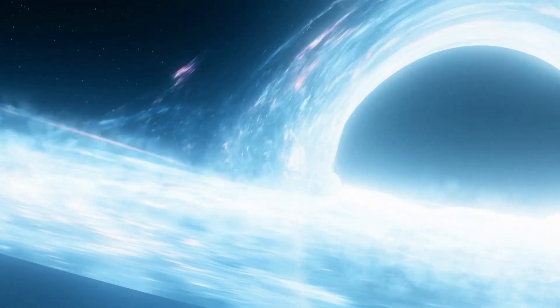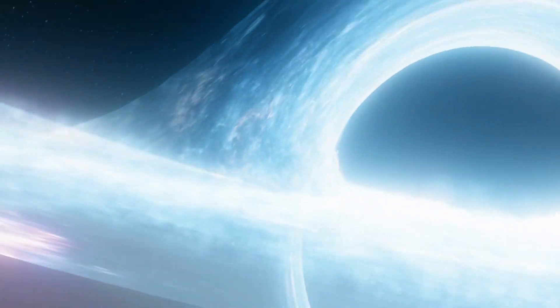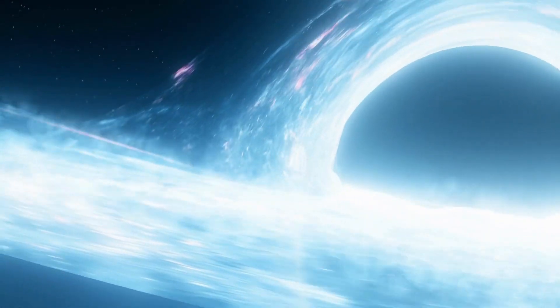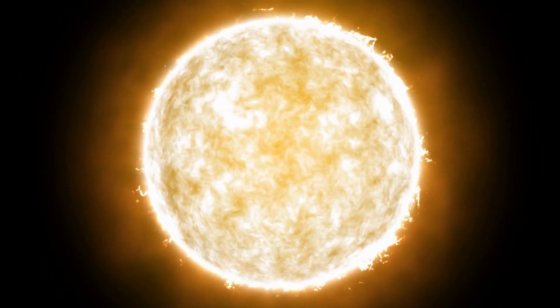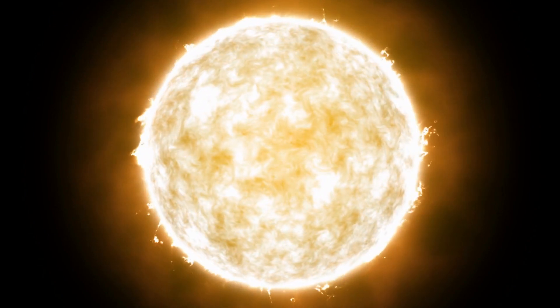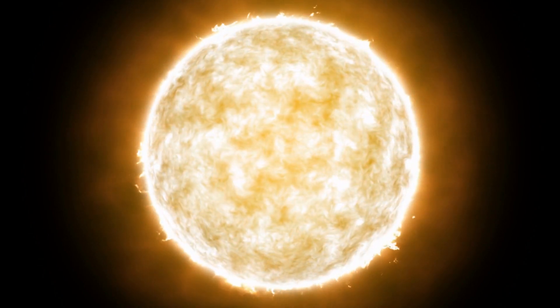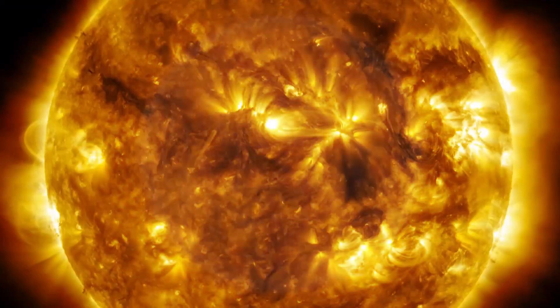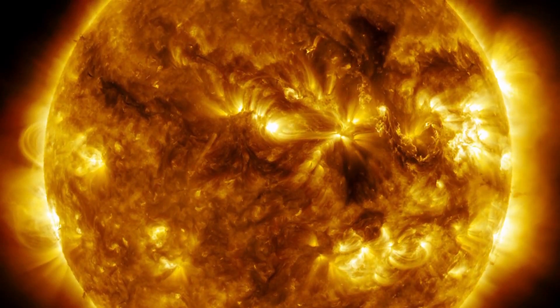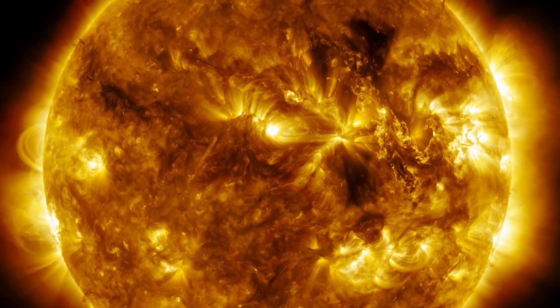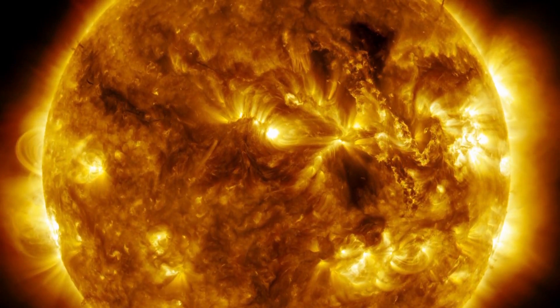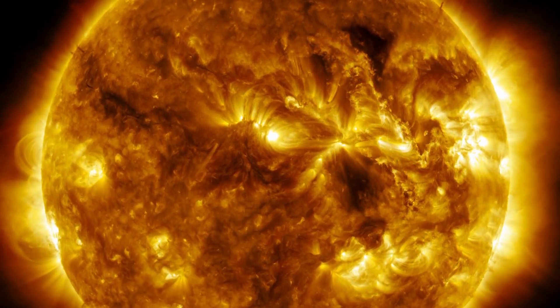To understand how black holes formed and what happens inside them, it is necessary to go back to the life cycle of a massive star. These massive stars are true cosmic powerhouses fueled by the incredible nuclear fusion reactions that take place in their cores. The sun's energy source comes from the fusion of hydrogen and helium. During this process, two hydrogen atoms combine in a collision and form a helium atom.